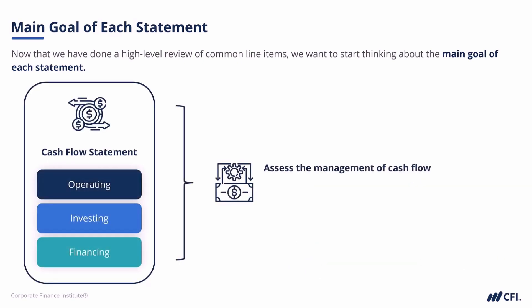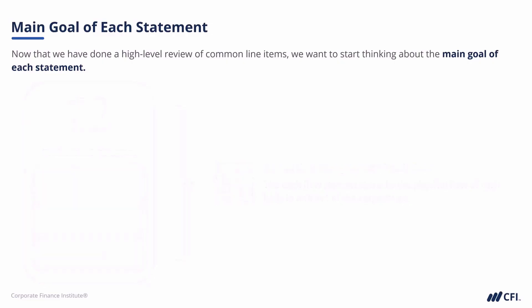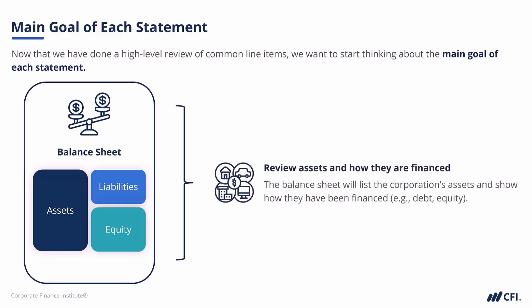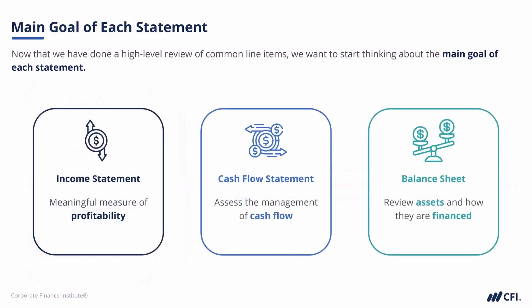The cash flow statement can help us assess how well the company manages its cash flow. One of the great things about a cash flow statement is that it tracks exactly the physical flow of cash in and out of the corporation. Over on the balance sheet, it lists all of the corporation's assets and shows us exactly how they've been financed. So these three statements together help us get an overall health check on profitability, management of cash flow, and a list of all the assets and how they're financed through a capital structure.